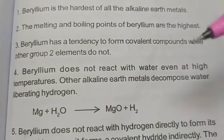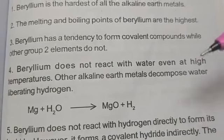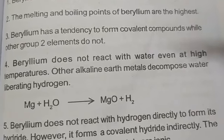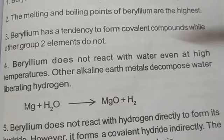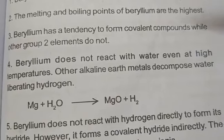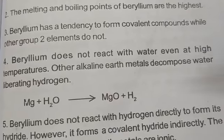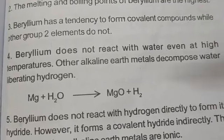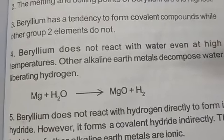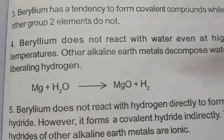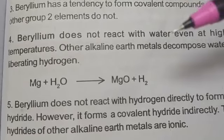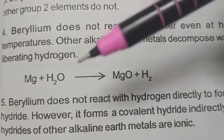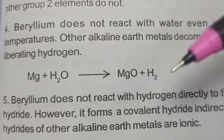Next, types of compound formation. Beryllium forms covalent compounds, whereas other elements in Group 2 do not form covalent compounds. Regarding reaction with water: beryllium does not react with water even at higher temperature, but all other alkaline earth metals react with water to form the corresponding oxide and hydrogen. For example, magnesium reacts with water to form magnesium oxide and liberates hydrogen.